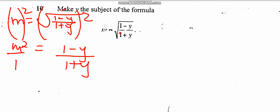The question is saying make y the subject, so I'm going to do cross multiplication. This one is going to multiply this one and this one is going to multiply this one. So I'm going to be left with m squared multiplying 1 plus y is equal to 1 multiplying 1 minus y.